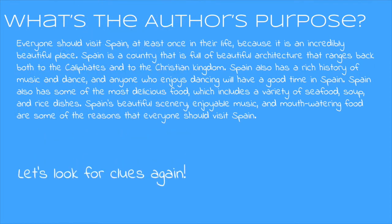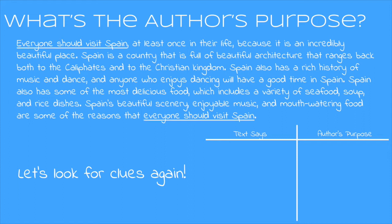We can use the clues again to figure out the author's purpose. We'll use the exact same graphic organizer. We need to look for details that go together. The first details are pretty obvious because they're repeated — the author says something twice, which is probably an indication that it's pretty important. Everyone should visit Spain — they say it once at the beginning and once again at the end. So if everybody should visit Spain, that's the author saying what they want us to do: they want us to visit.